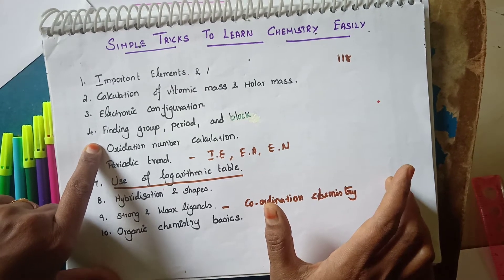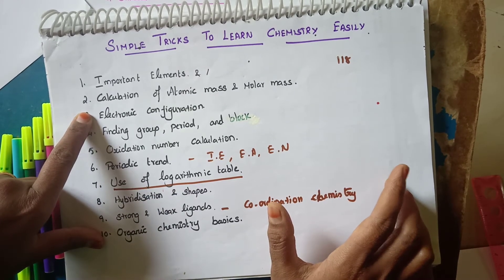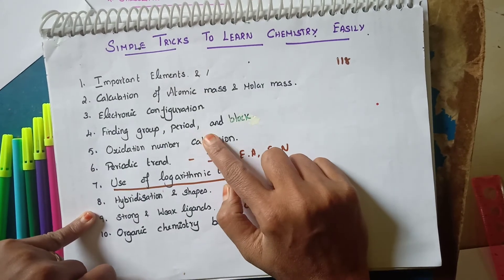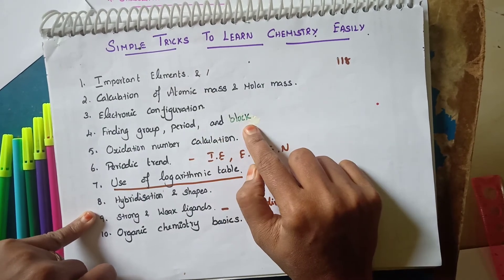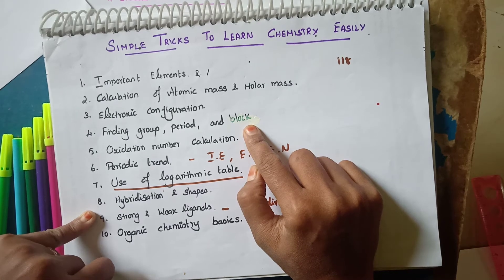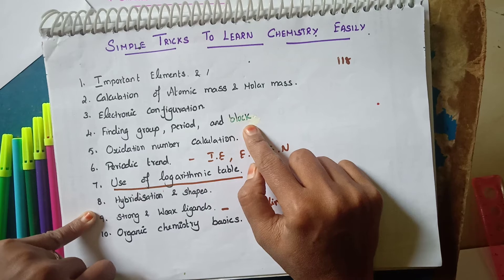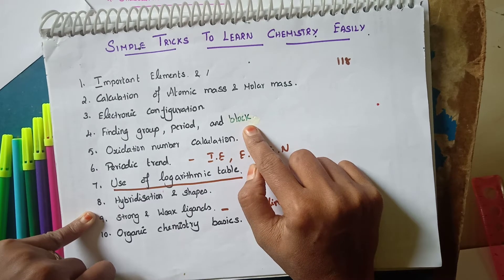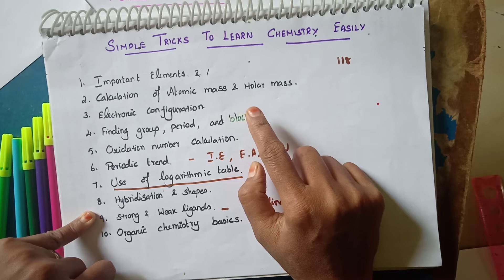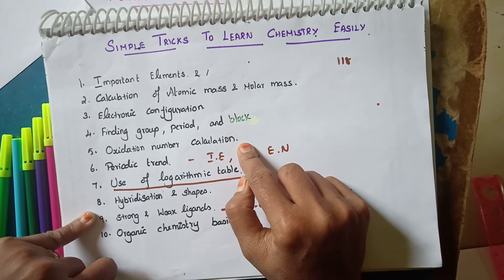The next topic is finding the group, period, and block. Once you know how to write the electronic configuration properly, it is easy to determine which group, period, and block an element belongs to. If you do not know, I will give you a simple trick to find the group, period, and block from the electronic configuration.